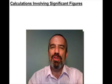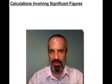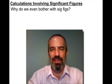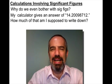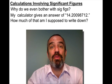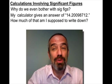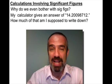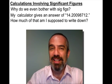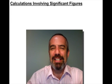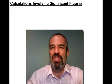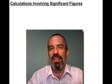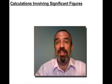Today we're going to be talking about calculations involving significant figures. Before we do though, a couple quick questions. Why do we even bother with significant figures? What good are they? What are they all about? Another question is, okay, so my calculator gives an answer of 14.20098712. How much of that am I supposed to write down? That's going to come up again and again. Just because your calculator gives an answer like that doesn't mean you should be writing that whole thing down. So it's all about precision, precision in measurements. And the question is, can we get our calculations to reflect the same level of precision in our answers as we had in the measurements that went into those calculations?